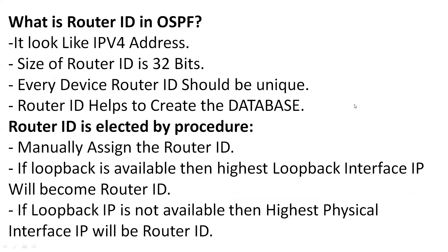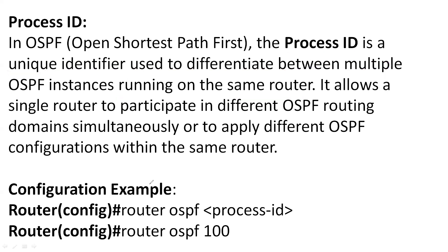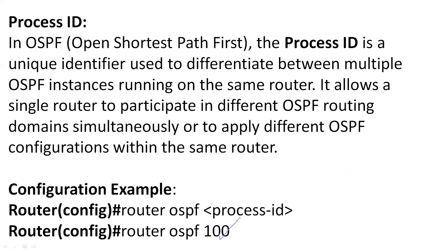The Process ID is a number between 1 and 65535. It is a unique identifier used to differentiate multiple OSPF instances running on the same router. The Process ID is only used to initiate the OSPF process. To initiate OSPF, go to global configuration mode and use the command: router ospf [process-id], where the process ID is a number between 1 and 65535.